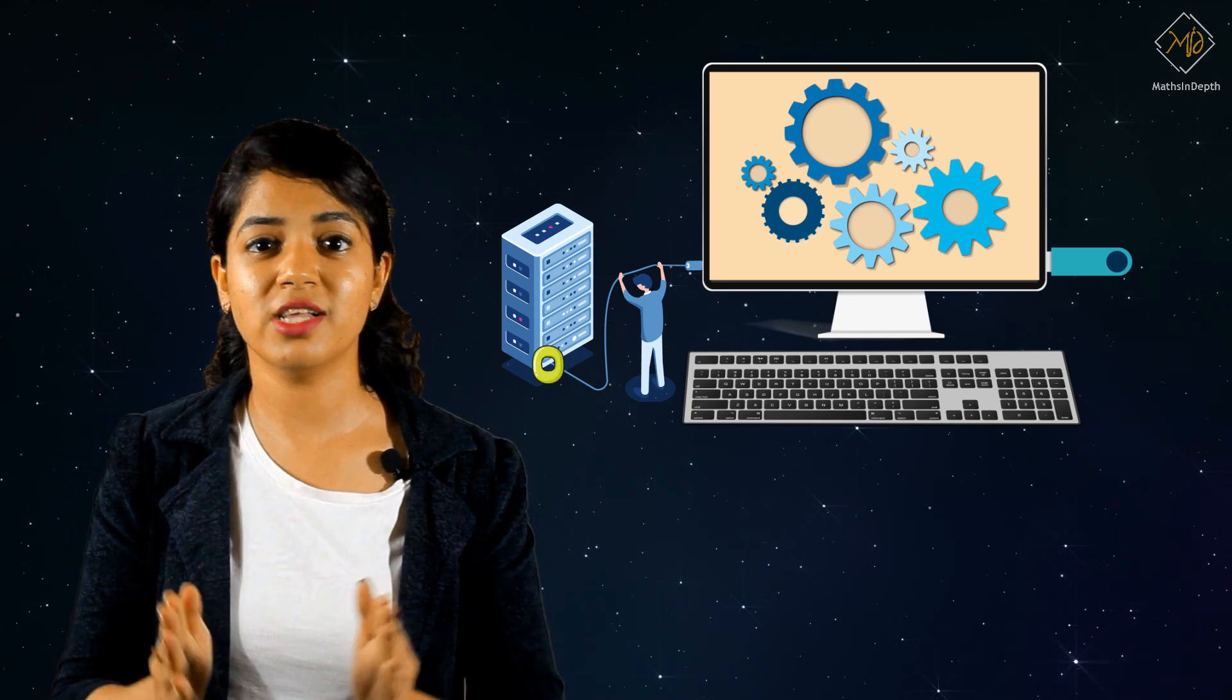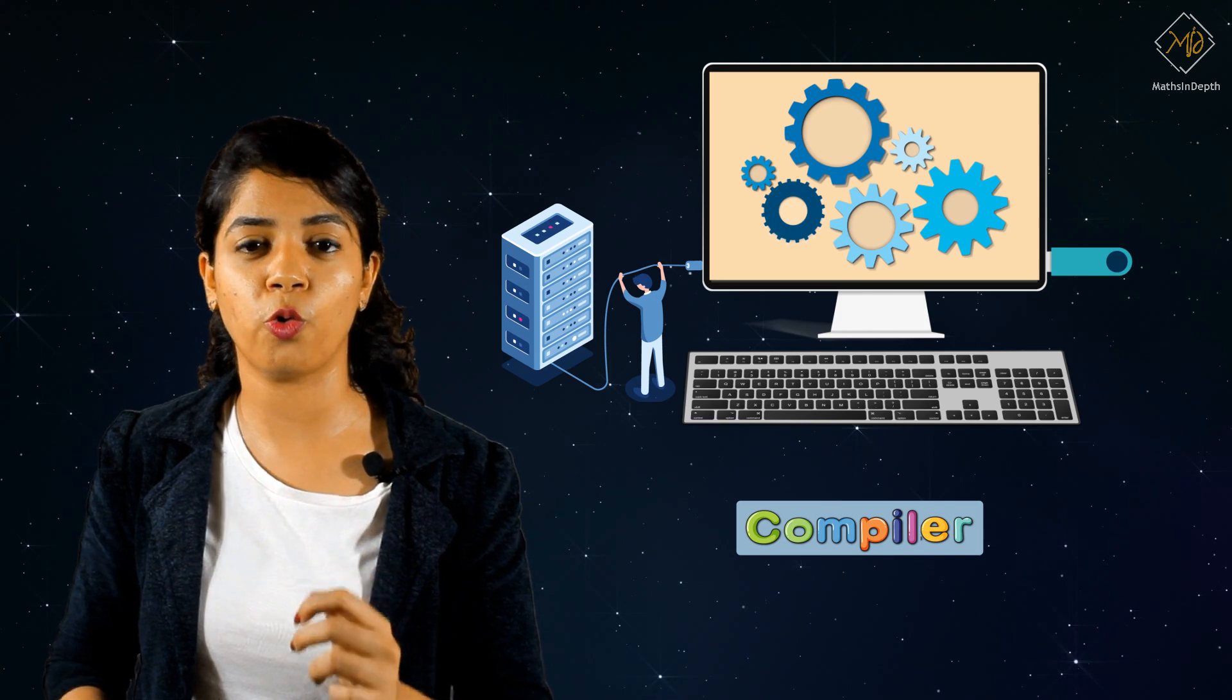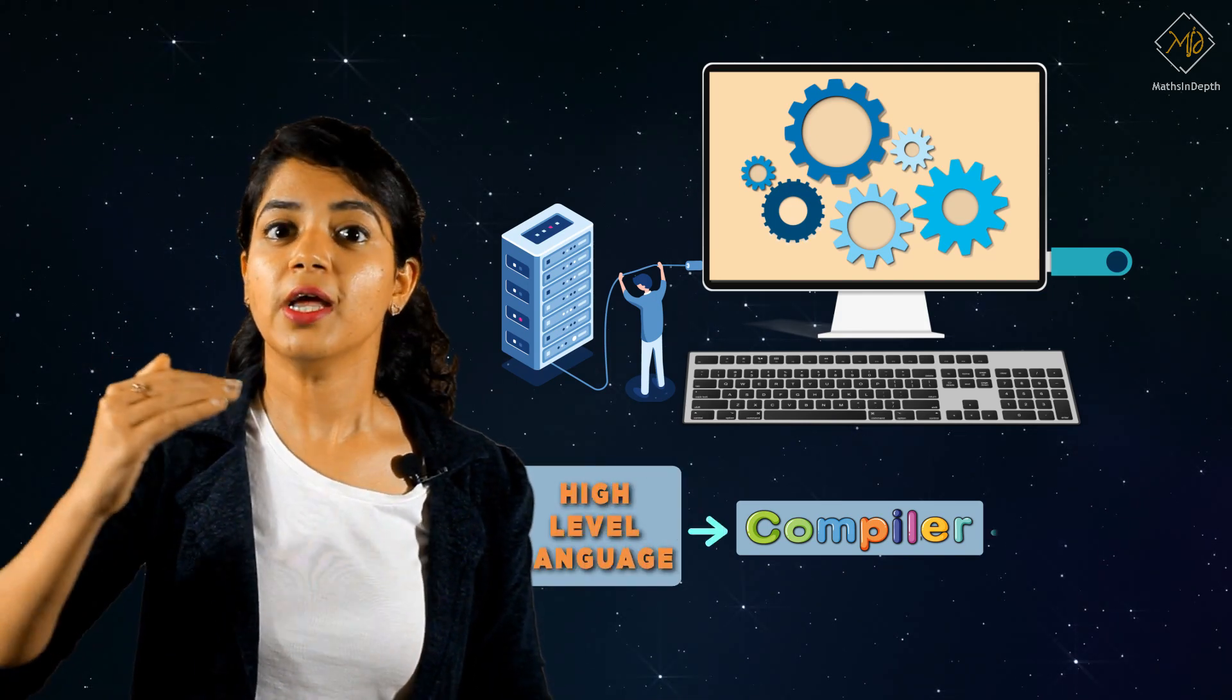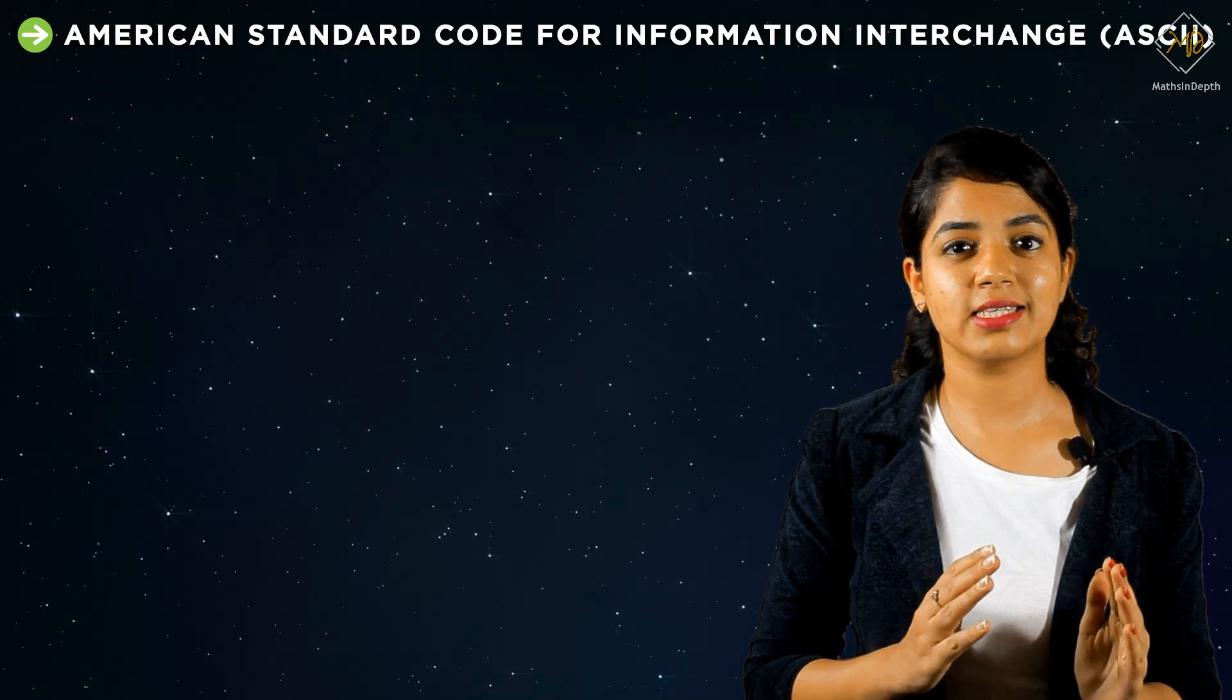Yes, a compiler plays the core role in converting high-level language, like English-like programming language, into low-level language, which is in the form of zeros and ones. There is a coding system called ASCII system, which is used to convert symbols into numbers.